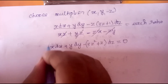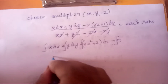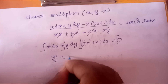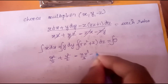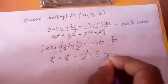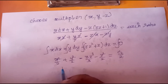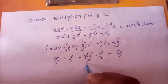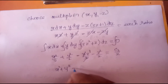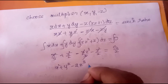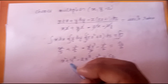Integrating both sides: x²/2 + y²/2 - 3z³/3 - z²/2 = c₂/2. Dividing through by 2 and simplifying: x² + y² - 2z³ - z² = c₂. This is the second solution.